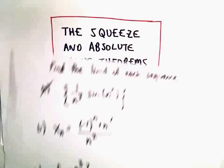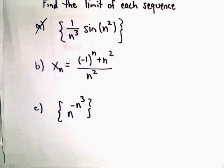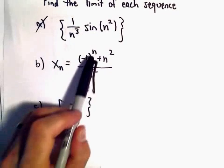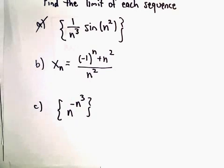Okay, here we're going to do a limit problem involving the absolute value theorem. We're going to find the limit of the sequence x_n = (-1)^n + n^2 over n^2.